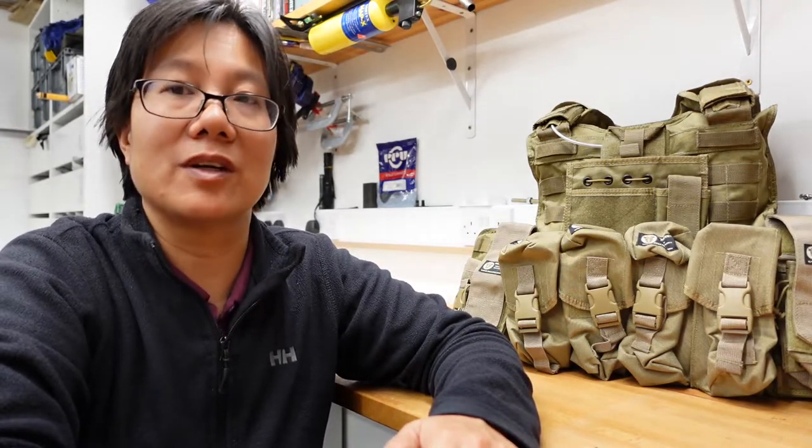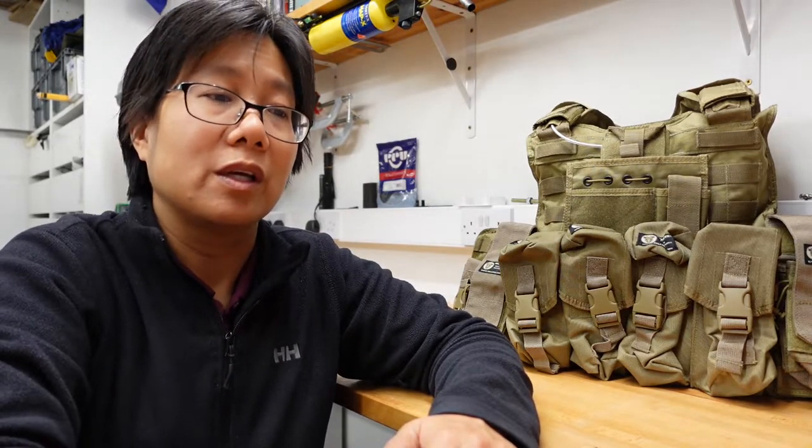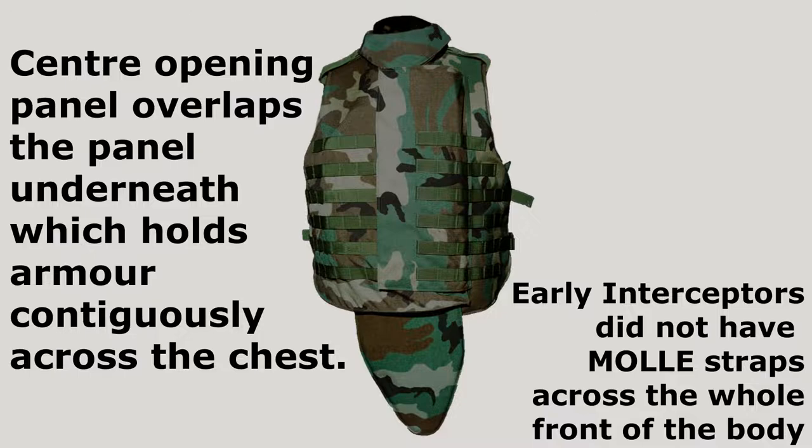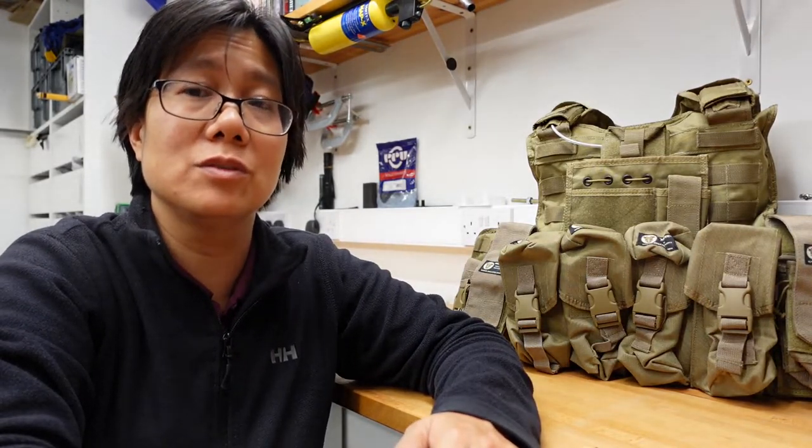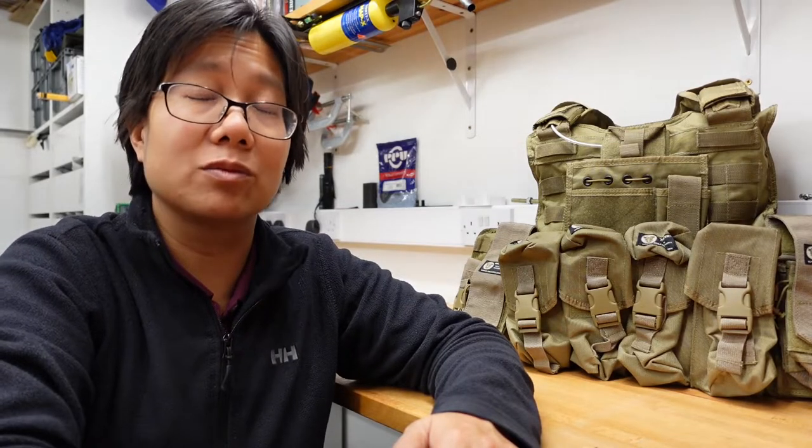Now the interceptor vest did have some disadvantages. The first one really was that it was center opening, so there was a Velcro along the front and it opened much as you'd open a jacket or shirt from the center. The plates were meant to cover the whole front of the body and also the back. So there was a need to have additional fabric in order to enclose the entire front with the armor, as well as being able to open up the vest from the center. This additional fabric was heavy and hot. And so when the theater shifted to the Middle East, heavy and hot was really a disadvantage.